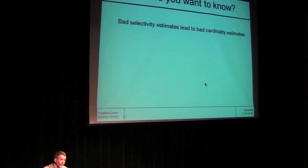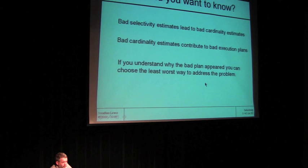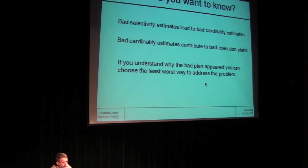Conclusion: bad selectivity leads to bad cardinality estimates. You need to know how Oracle does bad selectivity, because bad cardinality estimates — they are not the sole cause, but they contribute enormously — to bad execution plans. If you can actually understand why the bad plan has appeared, if you can go from the plan back to the cardinality, back to your estimates of selectivity, you may recognize what peculiar quirk of the optimizer produced that selectivity and cardinality.